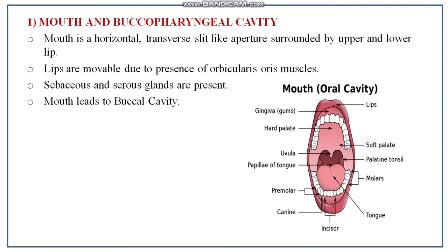The mouth is a horizontal and transverse slit-like aperture, surrounded by two lips — upper lip and lower lip. The lips are movable due to the presence of orbicularis oris muscles. Two types of glands are present: sebaceous glands on the outer side of the lip, and serous glands on the inner side. Sebaceous glands are also known as oil glands, and serous glands are modifications of mucous glands which produce watery secretion inside the mouth. The mouth opens into the buccal cavity.